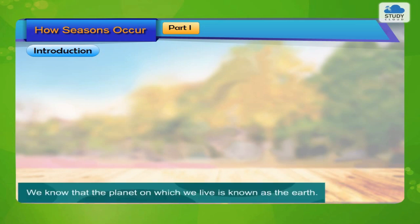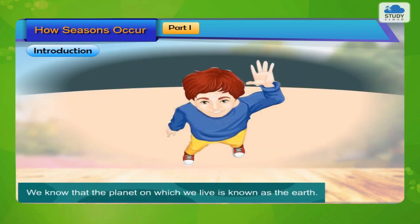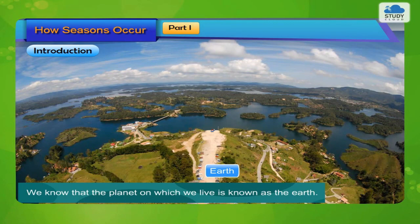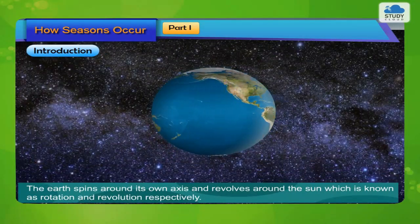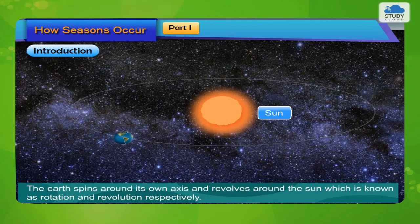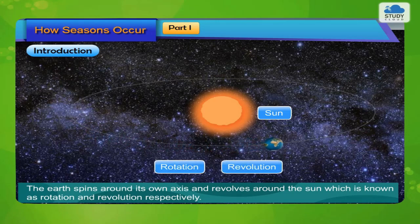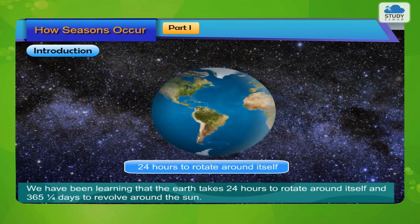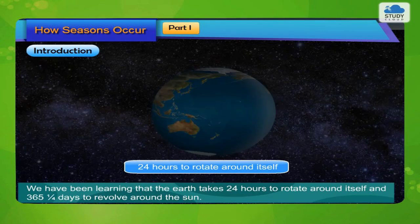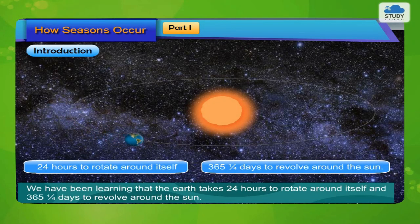How Seasons Occur, Part 1: Introduction. We know that the planet on which we live is known as the Earth. The Earth spins around its own axis and revolves around the Sun, which is known as rotation and revolution respectively. The Earth takes 24 hours to rotate around itself and 365 and one-quarter days to revolve around the Sun.